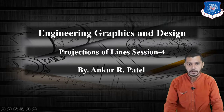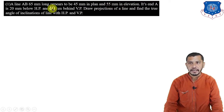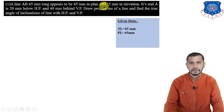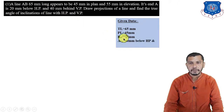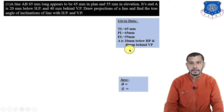Problem 1: A line AB, 65mm long, appears to be 45mm in plan and 55mm in elevation. Its end A is 20mm below HP and 40mm behind VP. Draw the projection of the line. The given data is: true length = 65mm, plan length = 45mm, elevation length = 55mm, and A is 20mm below HP and 40mm behind VP. Point A is in the third quadrant. We have to find the true angles of inclination theta and phi.